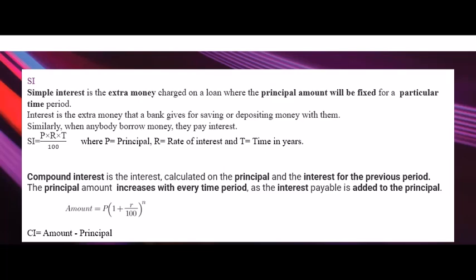The basic difference between simple interest and compound interest is that in case of simple interest, the interest is always calculated on a fixed principal. Whereas in the case of compound interest, the principal changes per year.